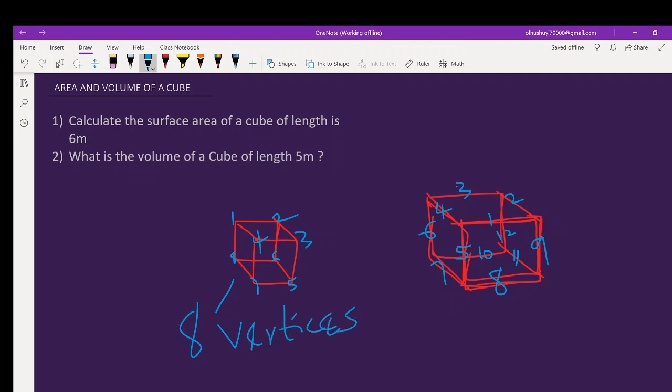And it has what? Twelve edges and six faces. These are the properties of a square—of a cube.